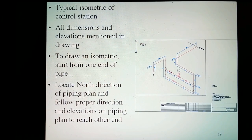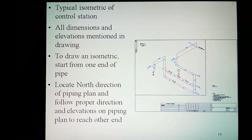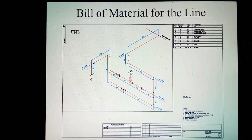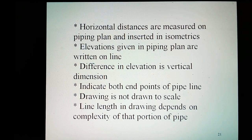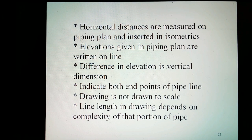A typical isometric of the line: this drawing shows a control station. All dimensions and elevations are mentioned in the drawing. To draw an isometric, start from one end of the pipe. Locate the north direction of the piping plan and follow proper directions and elevations on the piping plan to reach the other end. Horizontal distances are measured on the piping plan and inserted in the isometric. The elevations given in the piping plan are written on the line. The difference in elevation is the vertical dimension. Indicate both endpoints of the pipeline. The drawing is not drawn to scale — the pipe length in the drawing depends on the complexity of that portion of the line.